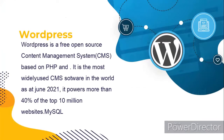What is WordPress? WordPress is a free open source content management system that is based on PHP and MySQL. It is the most widely used CMS software in the world. As of June 2021, it powers more than 40% of the top 10 million websites and has an estimated 64% market share of all websites built using a CMS. WordPress started as a simple blog system but has evolved into a full CMS with thousands of plugins, widgets, and themes. It is licensed under the General Public License.